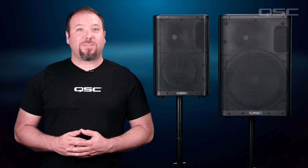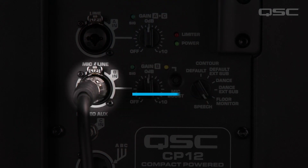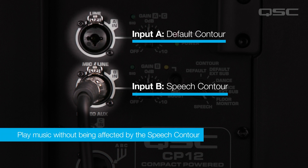After that, simply adjust your input gain to set your level and you're done. It's important to note that when the speech contour is selected, only input B is affected. Input A remains in the default contour. This is so you can have music playing on inputs A or C without that being affected by the speech contour on the microphone channel.